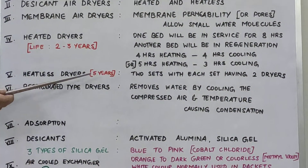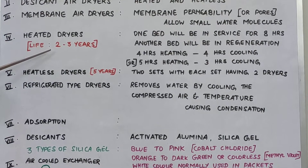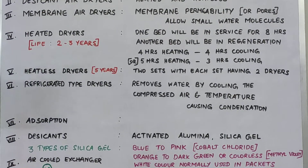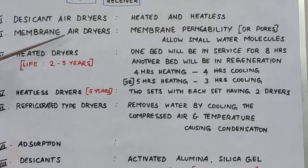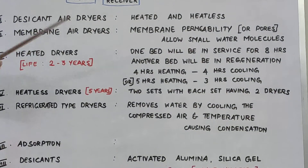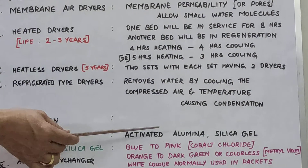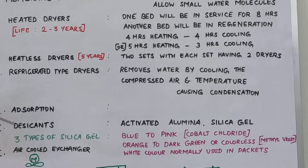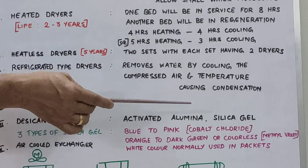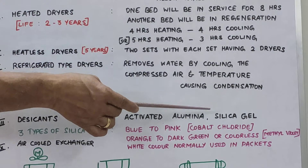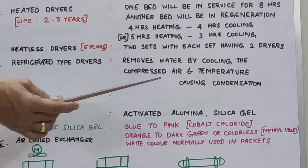The heatless dryer has a desiccant life of approximately five years, while the heated dryer desiccant life is normally two to three years. The desiccant used to remove moisture is of two types: activated alumina and silica gel. Activated alumina is also used alongside silica gel, and silica gel is used in sight glasses to indicate moisture abnormalities.